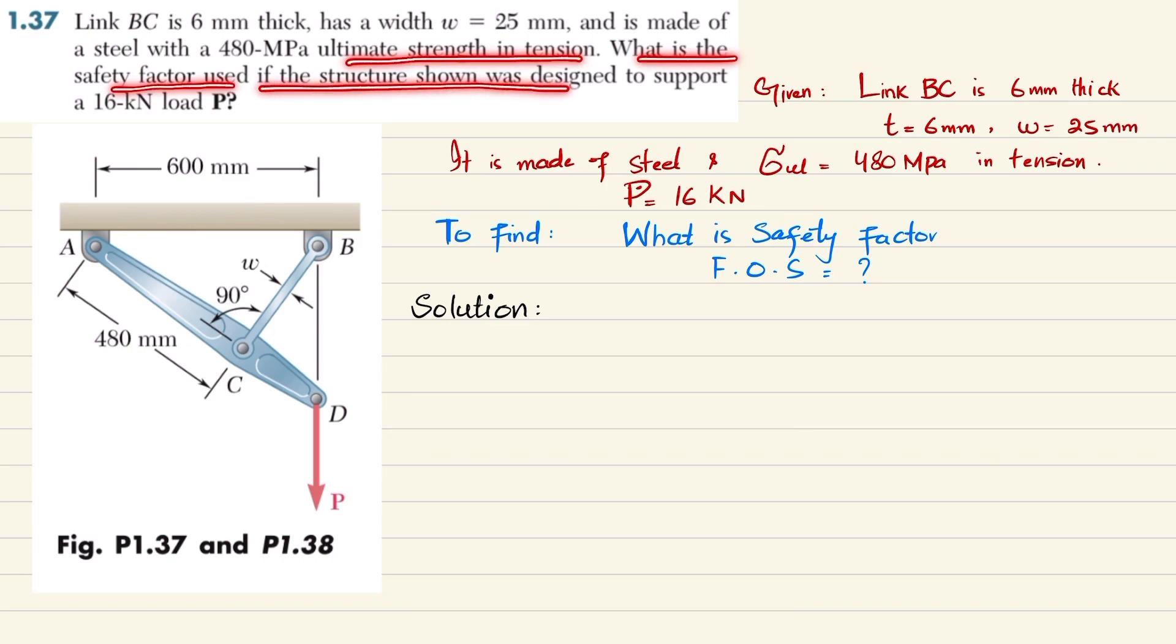You can see this is the structure where a load P of 16 kilonewton is applied. This is member BC having thickness 6 millimeter and width 25 millimeter. So you have to find the factor of safety for this member BC.